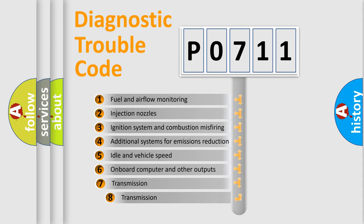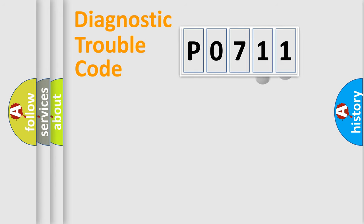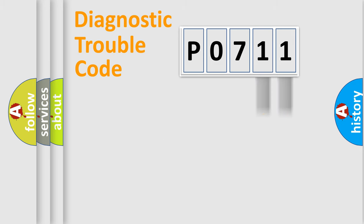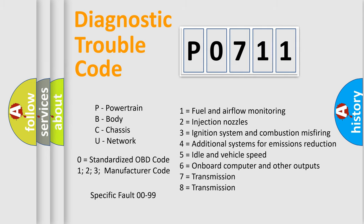The third character specifies a subset of errors. The distribution shown is valid only for the standardized DTC code. Only the last two characters define the specific fault of the group. Such a division is valid only if the second character code is expressed by the number zero.